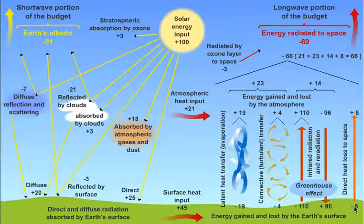8 parts make it all the way out to space in the form of long-wave radiation emitted directly from Earth's surface. So we've got 14 plus 8, that's 22, plus 4, that's 26, plus 19, that's 45. That accounts for all 45 parts.